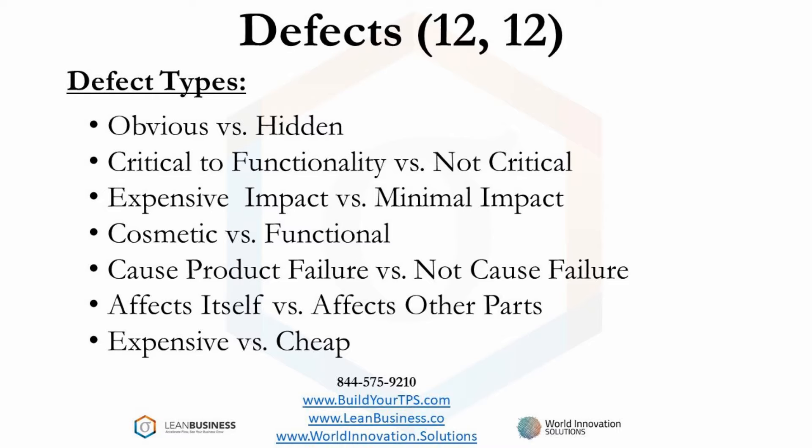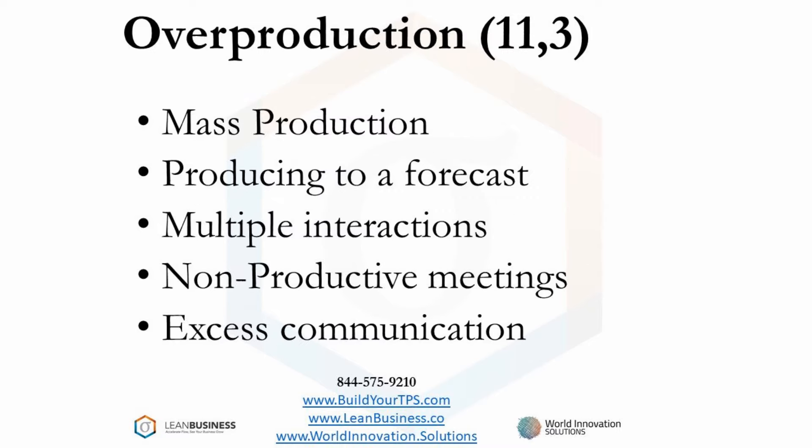Let's discuss overproduction next. An analogy of mass production would be a company with many divisions that did not talk within themselves — every division just went as fast as it could, producing and storing excess parts. Mass production is massive overproduction. If you are producing to a forecast instead of producing to an order, you are inherently overproducing. Multiple interactions to get something done represents wasted effort. Every meeting should have a time limit, a goal, and a facilitator — when the goal is met, the meeting is over. One area of excess communication that everyone can consider is email. How many times did you delete email without even looking at it? Your time is wasted.